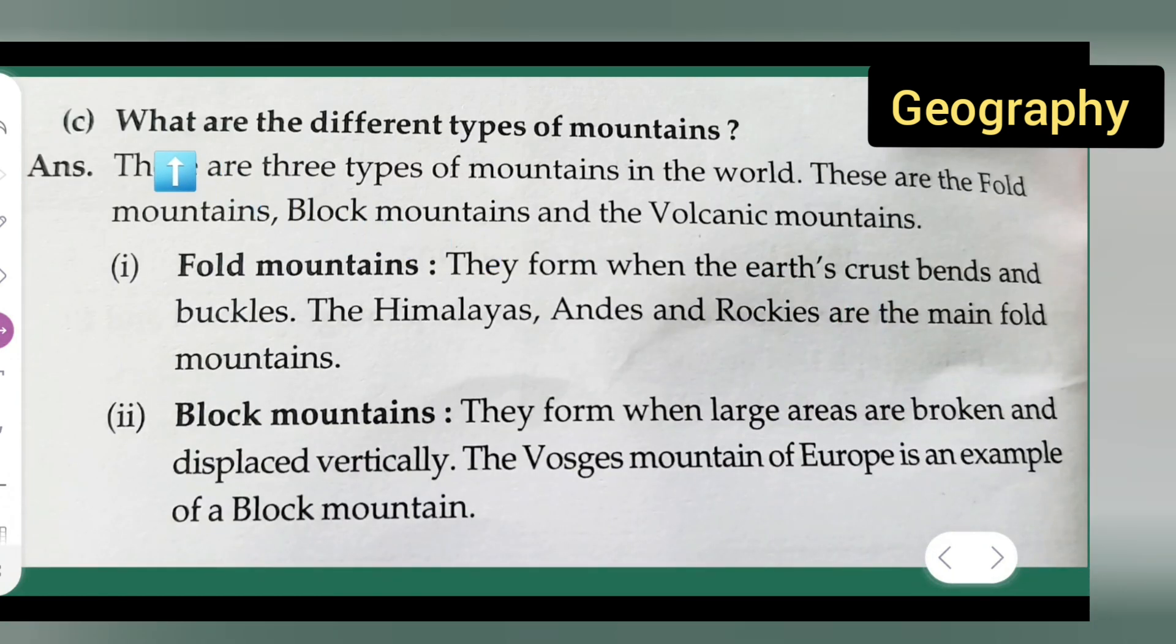So, first I will take down the question what are the different types of mountains? Now, basically there are 3 types of mountains in the world. These are the fold mountains, block mountains and the volcanic mountains.